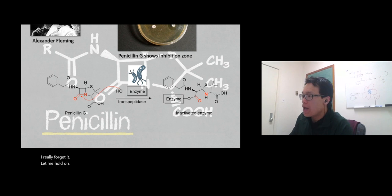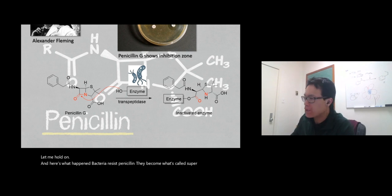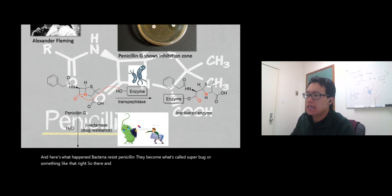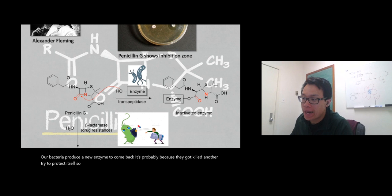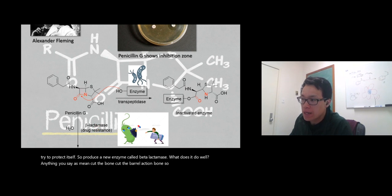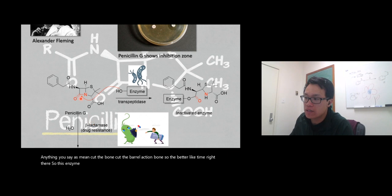Here's what happened: bacteria resist penicillin - they become what's it called, super bug or something like that. The bacteria produce a new enzyme to combat this problem because they got killed. They try to protect themselves, so they produce a new enzyme called beta-lactamase. What does it do? Anything ending in -ase means cut the bond - cut the beta-lactam bond. This enzyme catalyzes hydrolysis by cutting one bond of the beta-lactam. Oxygen attacks right there, destroys penicillin, and it becomes an inactive drug.